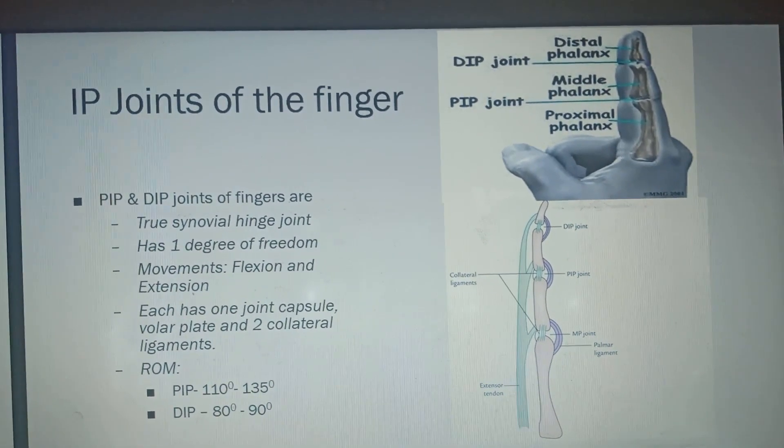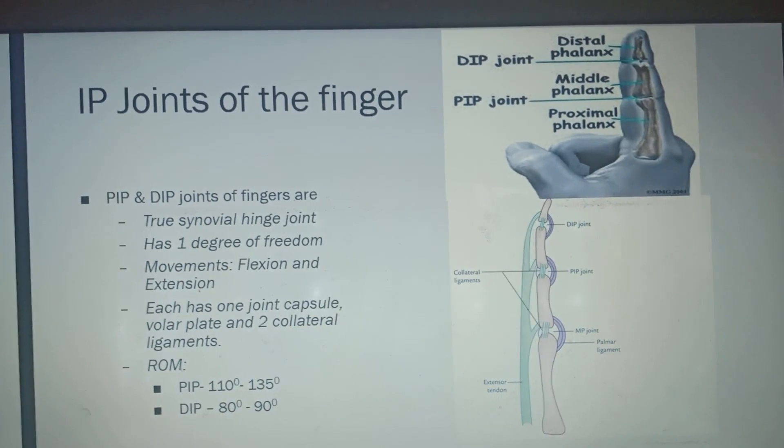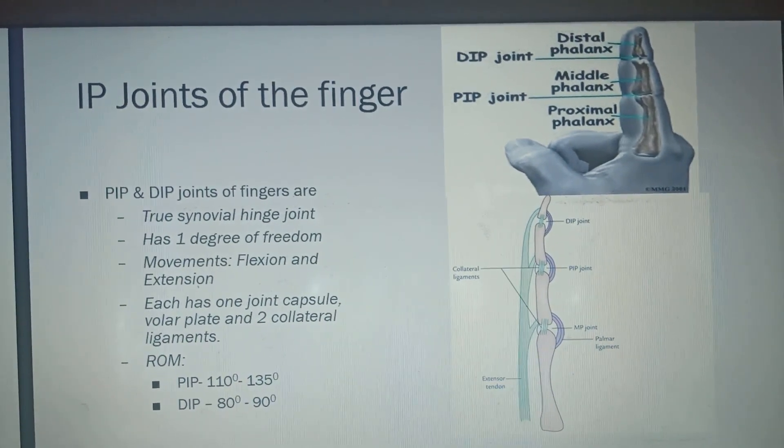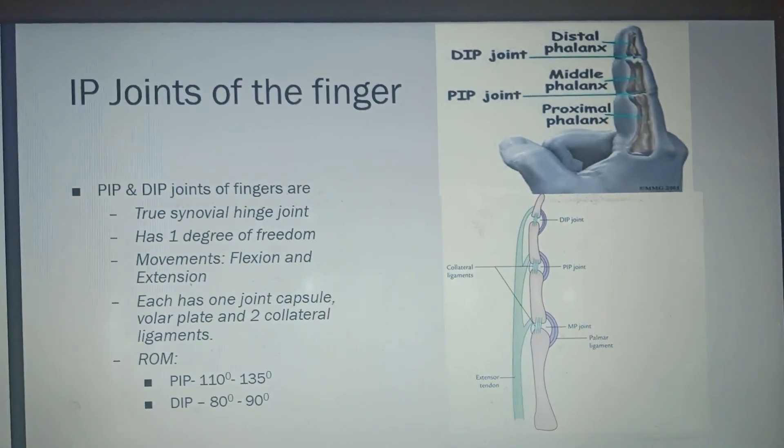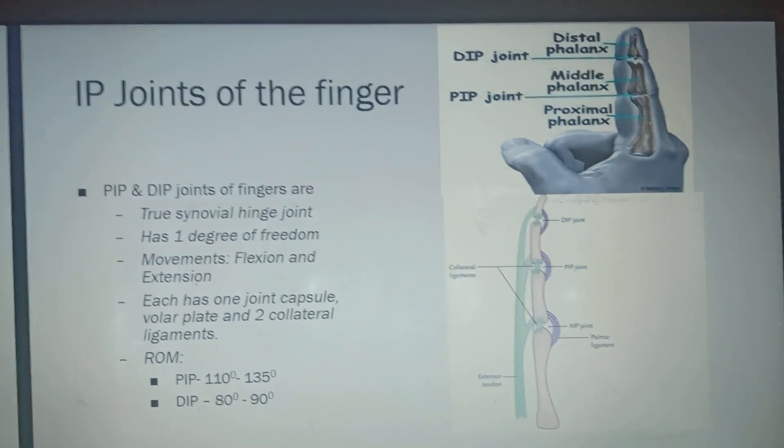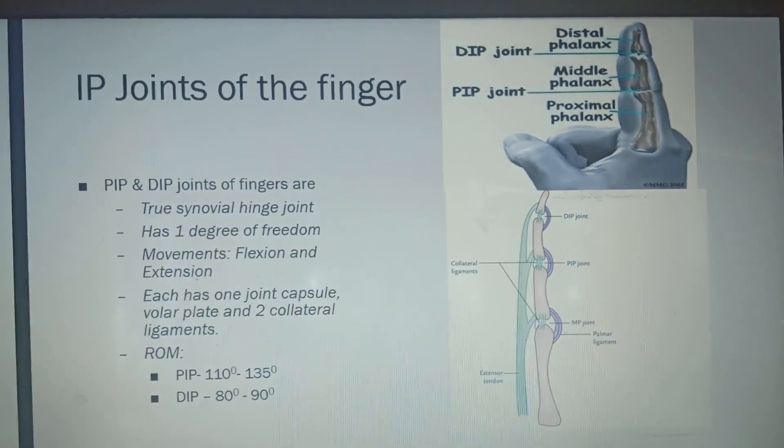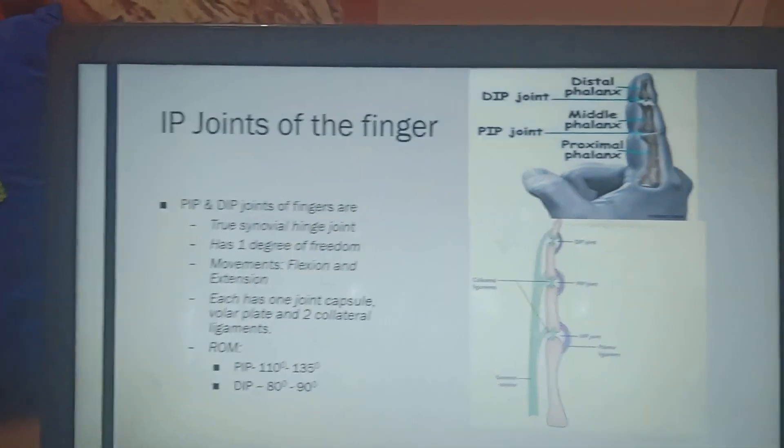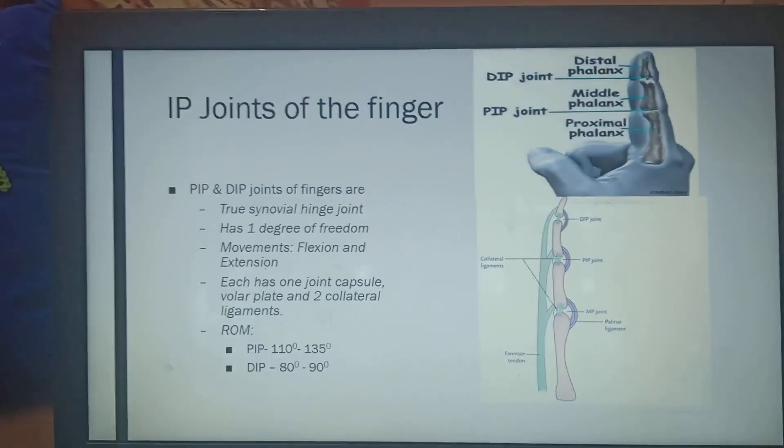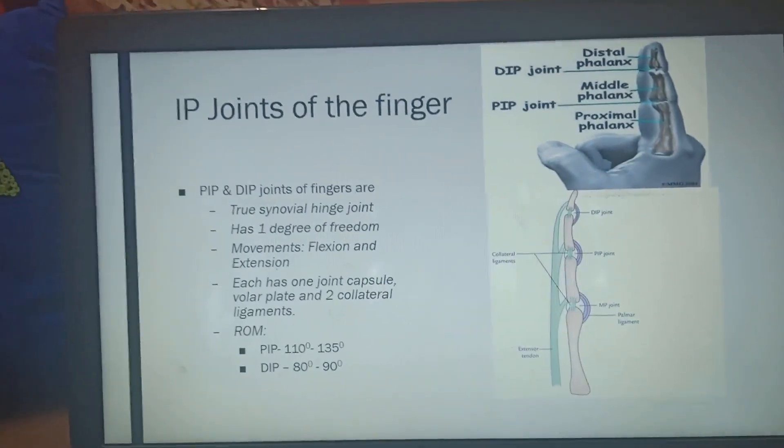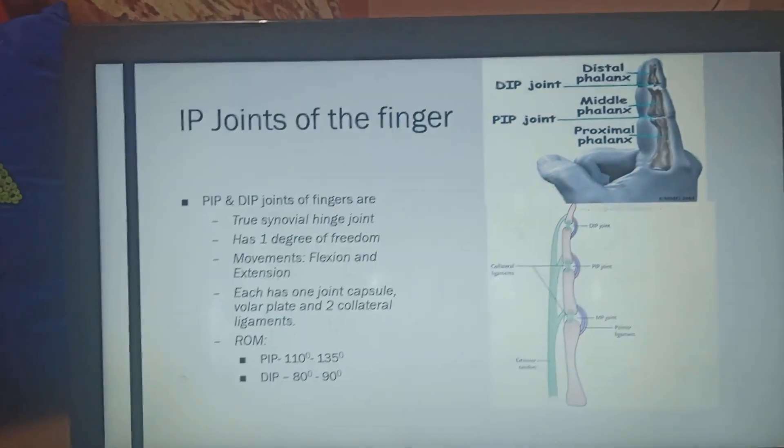Each has 1 joint capsule, volar plate and 2 collateral ligaments. It also has dorsal plate will be discussed later. The range of motion of the PIP and DIP is slightly different. The range of motion of PIP is 110 to 135 degrees versus DIP is 80 to 90 degrees.